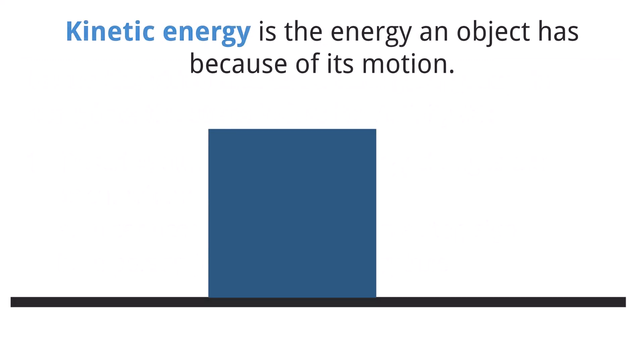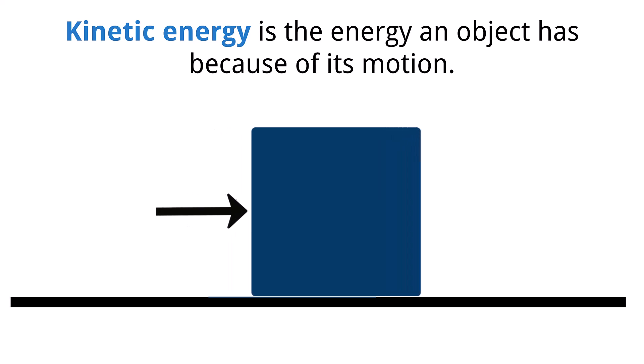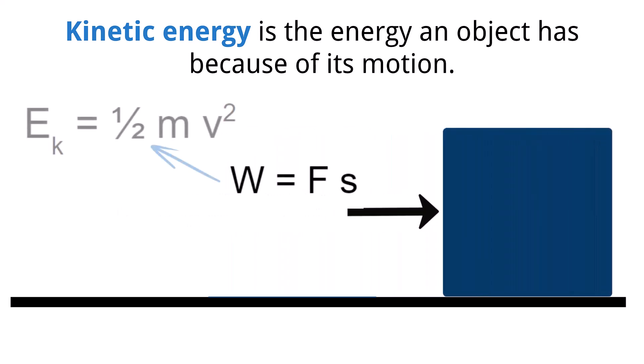When any object is in motion, we consider it to have kinetic energy. As the speed of an object increases, so does the amount of kinetic energy it has. Consider the situation of pushing on a box. In this case, we will ignore friction. The work done on the box will be converted to kinetic energy. To calculate the kinetic energy of an object that has an initial velocity of 0 meters per second, it is one half the mass of the object times its velocity squared.